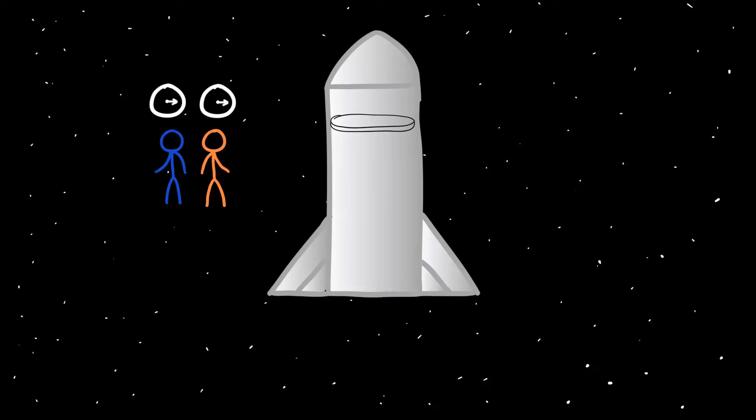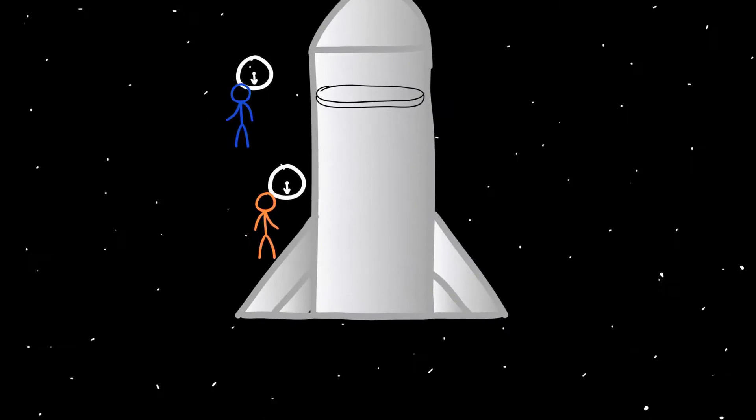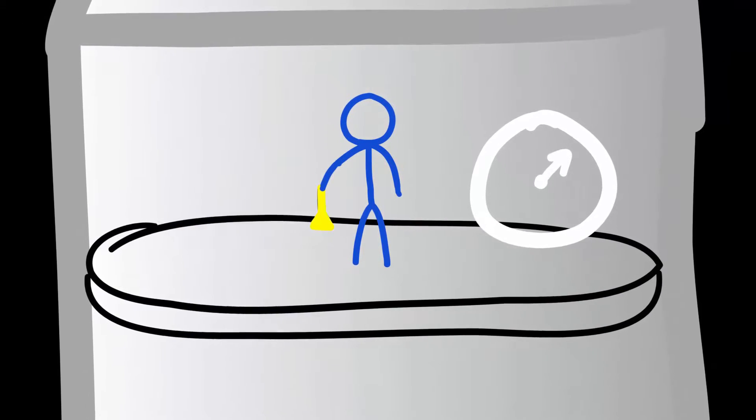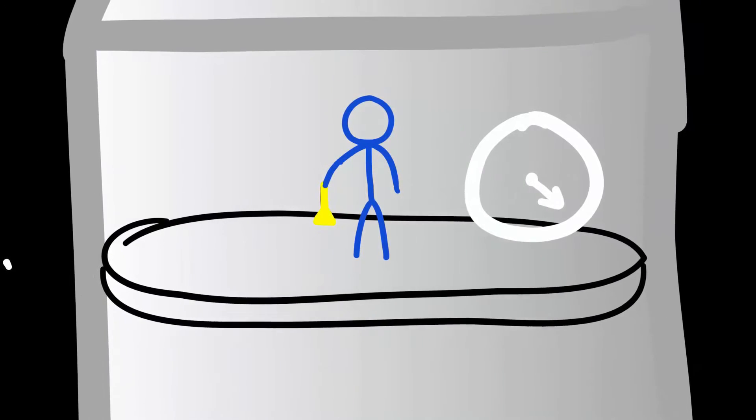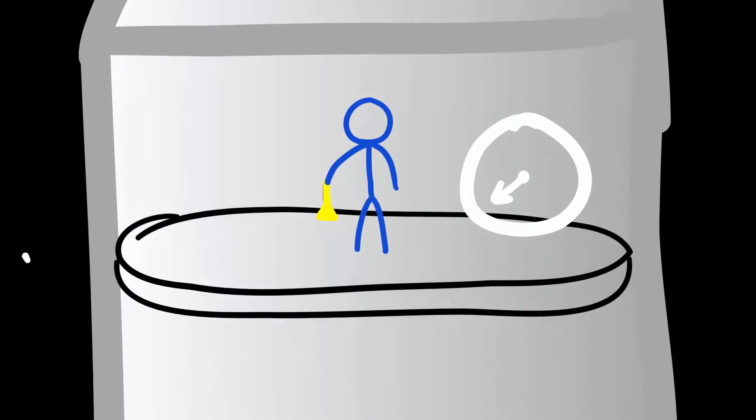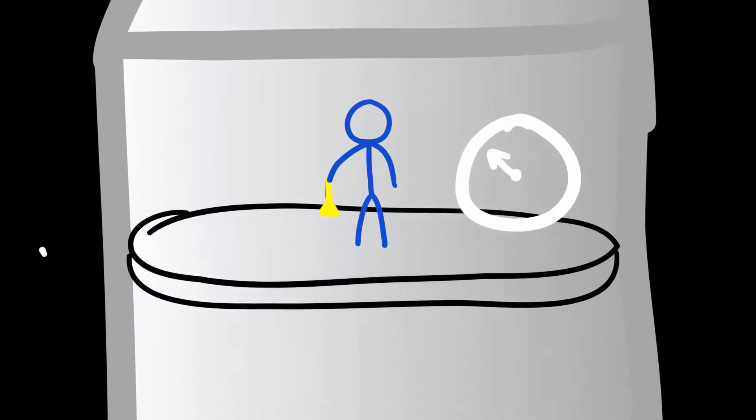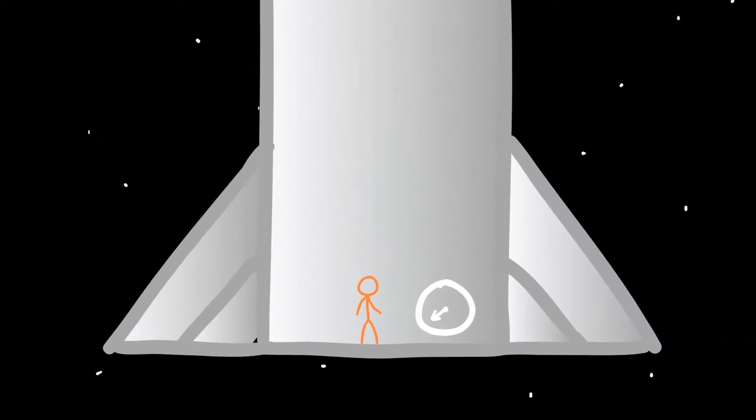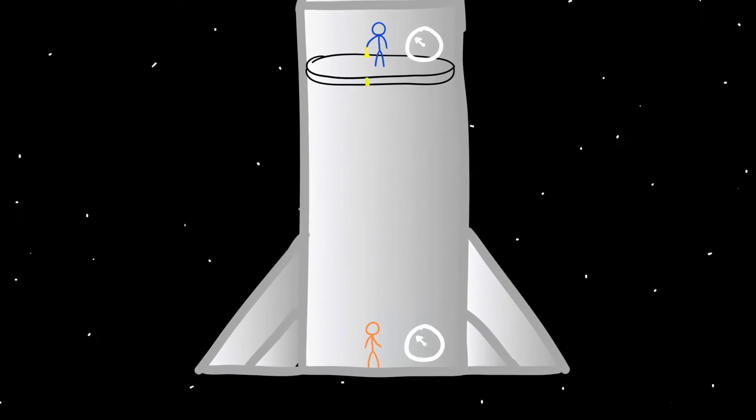Then Sal goes to the top while I go down to the bottom. Once Sal reaches the top, he takes out his flashlight and sends a light signal every time his clock ticks. Since the rocket isn't moving right now, the distance between us is D. So I down there will receive those signals coming to me all a second apart.